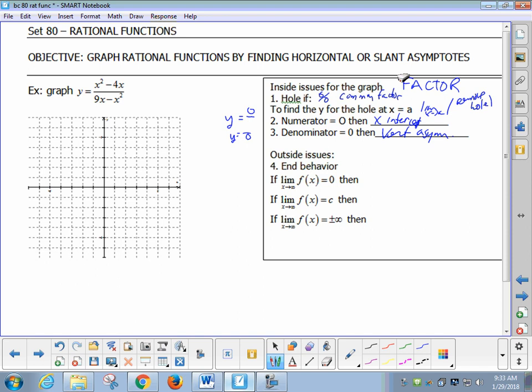Now, the new stuff of the day will be here. The end behavior. You still take the limit. There are really three cases. If the limit is zero, this usually happens because there's more power in the denominator. Then you have a horizontal asymptote at zero, at the x-axis. If f goes to zero, then y goes to zero. If y goes to zero, you're approaching the x-axis.